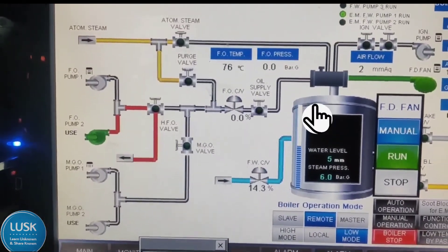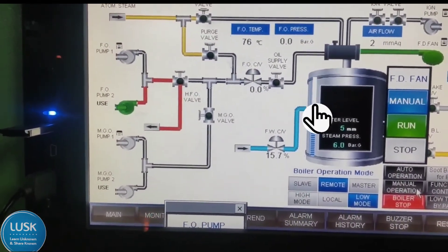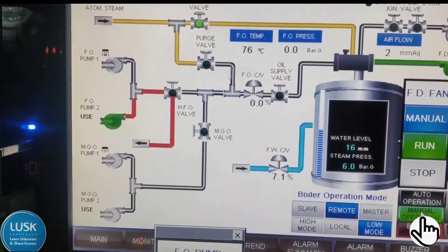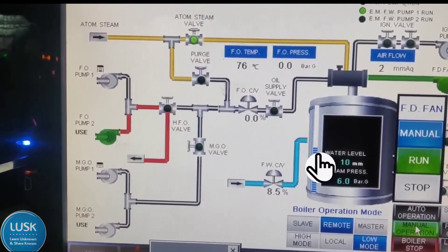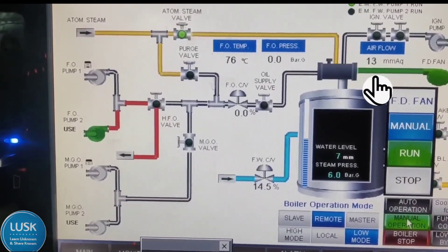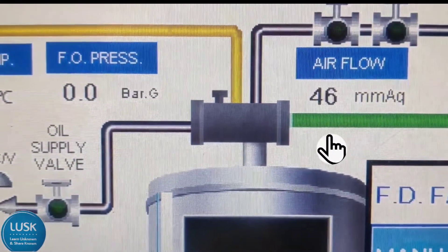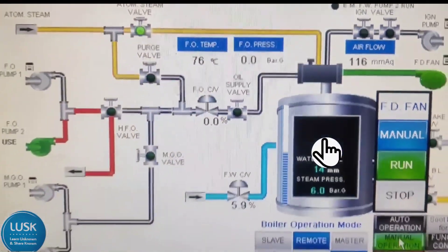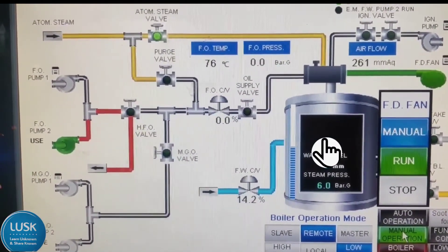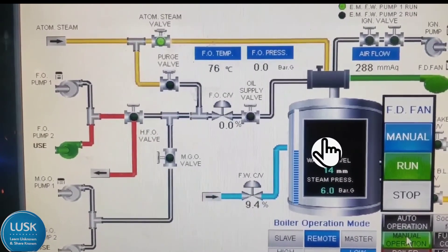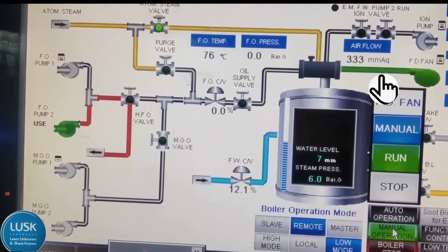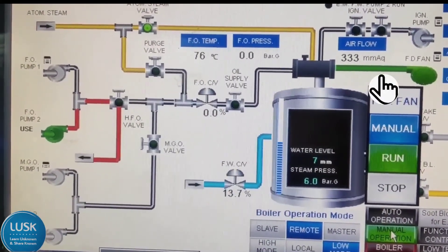When more amount of air is required, the flap will open slowly and more air will go inside the boiler for firing. Now we press manual operation — the boiler is going to start the sequence. You can see the FD fan flap is opening slowly; it was 2mm and now it is going to the maximum, around 300 to 330, which is full open. It will vary according to boiler brand. The purging period will be happening for approximately 1 minute.